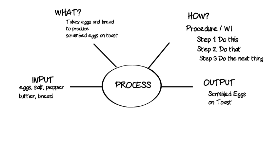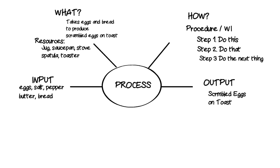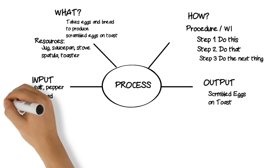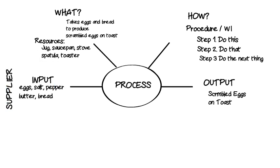Your raw materials don't appear out of thin air — you get them from someone we call a supplier. The supplier may be another company, another department within your company, your colleague, or in the case of scrambled eggs, your six-year-old son or daughter whose job it is to crack open the eggs.